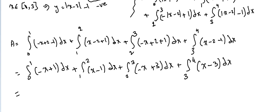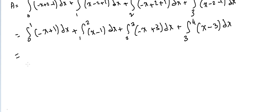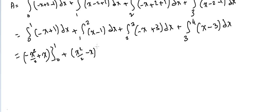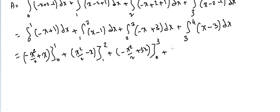Now I'll compute the antiderivatives quickly. It's minus x squared over 2 plus x, from 0 to 1; plus x squared over 2 minus x, from 1 to 2; plus minus x squared over 2 plus 3x, from 2 to 3; and plus x squared over 2 minus 3x, from 3 to 4.